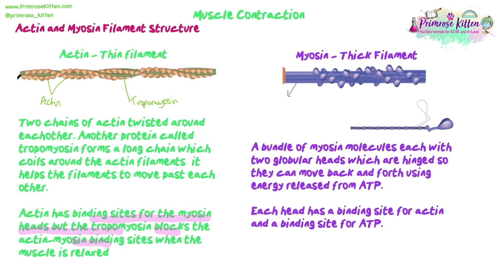The myosin is the thick filament — it's made up of a bundle of myosin molecules, each of which has two globular heads that are hinged so they can move backwards and forwards using energy released from ATP. Each head has a binding site for actin and a binding site for ATP, meaning the head can bind to actin at the actin-myosin binding sites and also bind ATP in order to perform this movement.